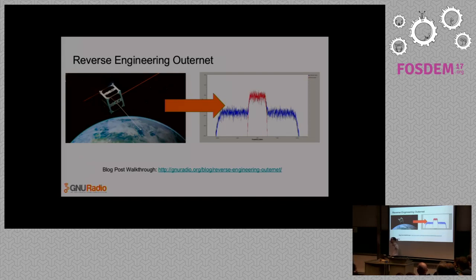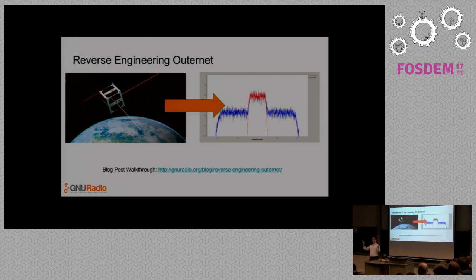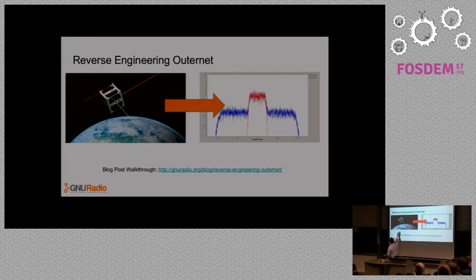Outernet is a project to try to provide Internet to the world — like Facebook's Internet.org and Google's Project Loon — the goal is to provide Internet through satellites, and their eventual goal is to do this through CubeSats. CubeSats are one of the areas where GNU Radio is getting used more and more heavily. Right now, Outernet doesn't have its own satellites, so it's using LEO satellites that are already there to broadcast.